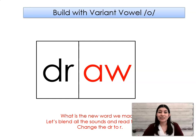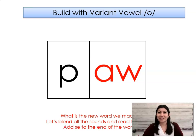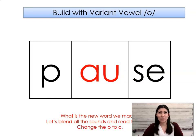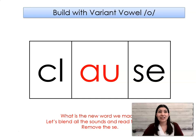Let's take out the N. What word did we make? Draw. Let's change the DR to R. What word did we make? Raw. Let's change the R to J. What word did we make? Jaw. Let's change the J to P. What word did we make? Paw. Let's add an S to the end of the word. What word did we make? Pause. Let's change the P to K. What word did we make? Cause. Let's change the C to CL. What word did we make? Claws.